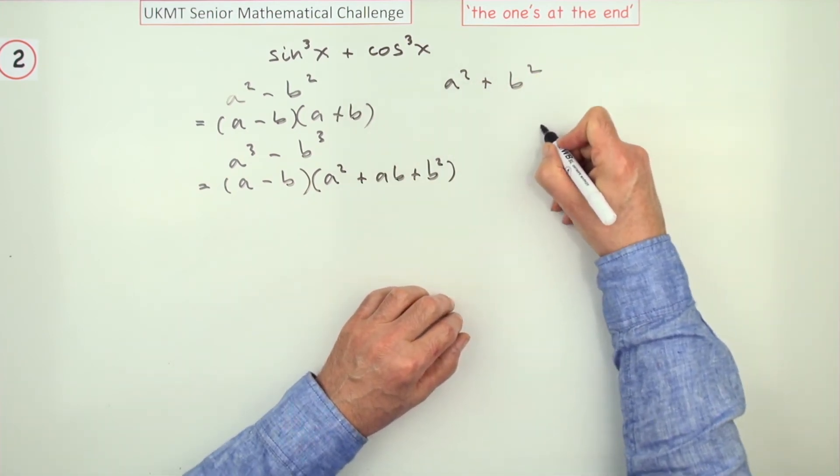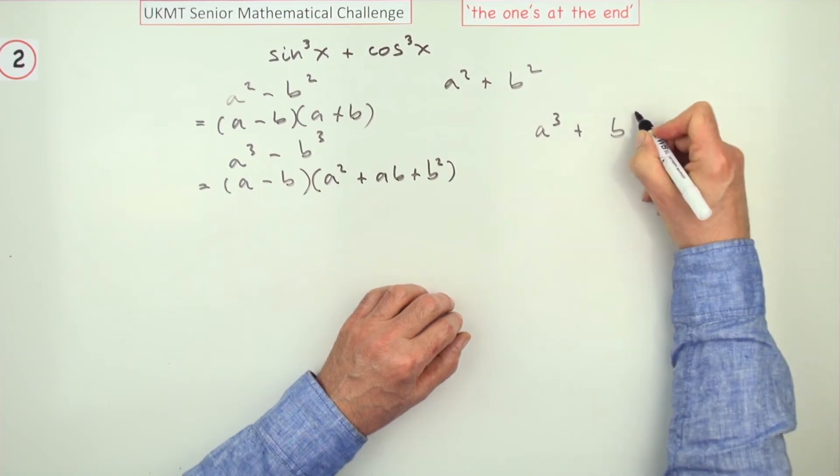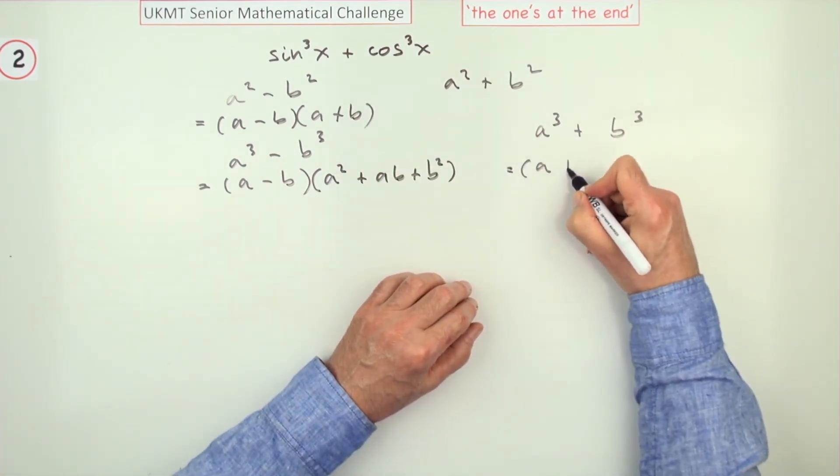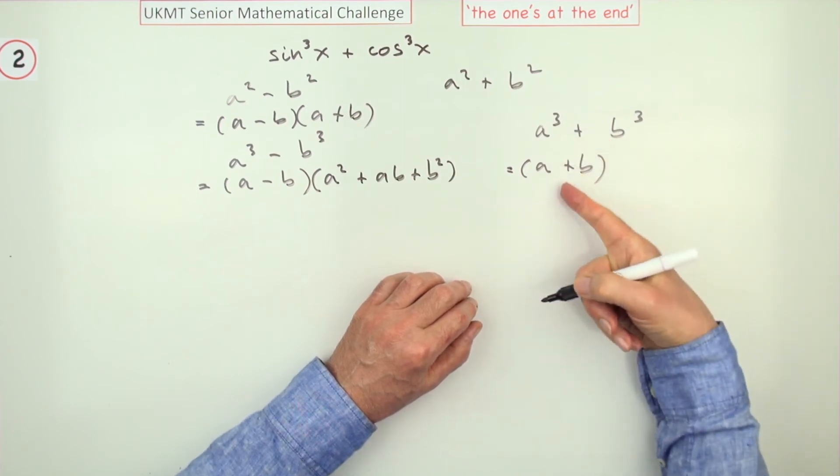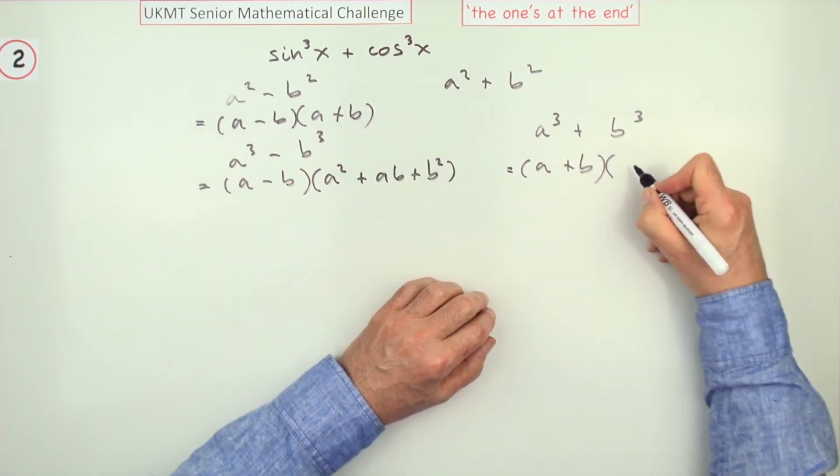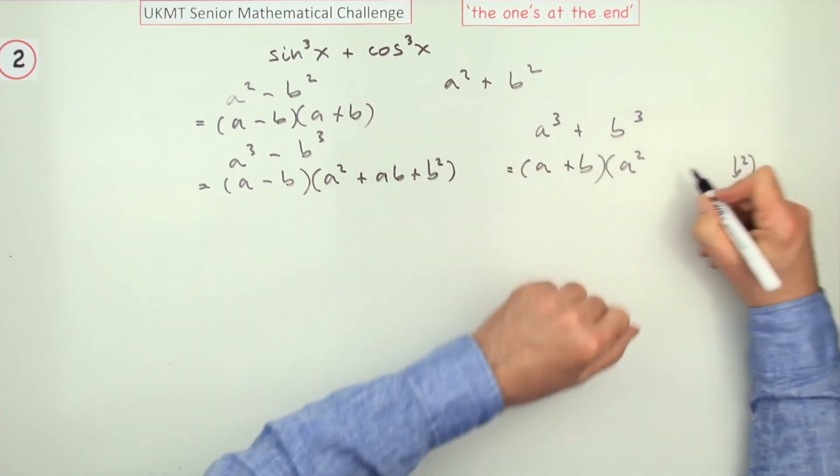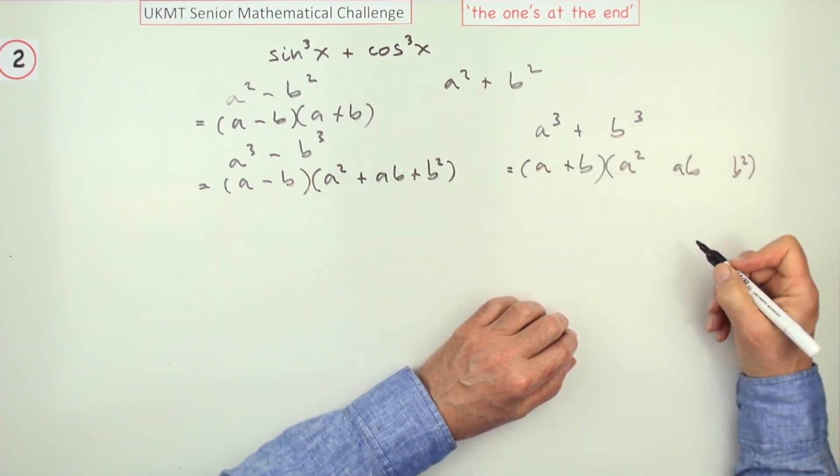And similarly, there's an expression for the sum of two cubes, unlike the sum of two squares, which starts a plus b. And again it must go a squared to make the first term and it must go b squared to make the last term. And then with symmetry you have ab.